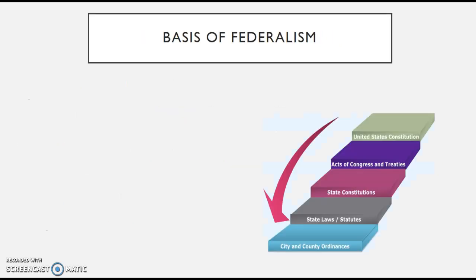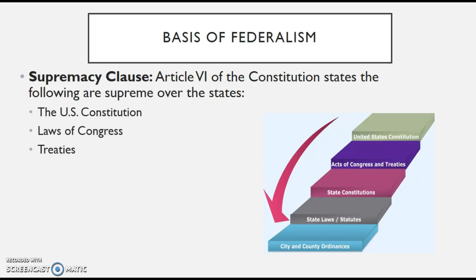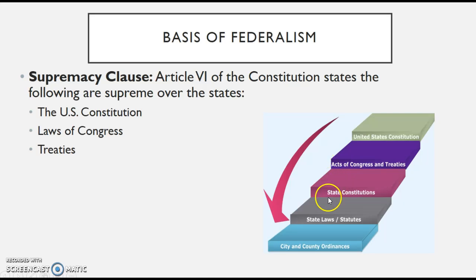The basis of federalism comes through the Supremacy Clause of Article VI of the Constitution, which establishes that the following are supreme over the states: the U.S. Constitution is the supreme law of the land; following that, we have Acts of Congress and Treaties; and then you have state constitutions, state laws, and city and county ordinances.